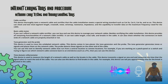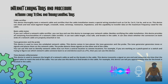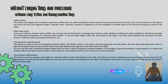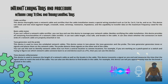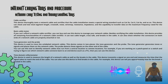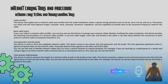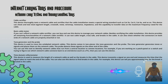A time domain reflectometer (TDR) is used to measure the length of a network cable as well as locate breaks in the cable. This device transmits a signal on one end and measures the time it takes to reach the end of the cable. You can also use it to find breaks — for example, it can tell you approximately how far along the cable a break is located.